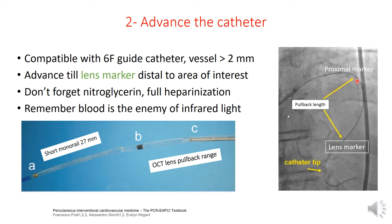The catheter can be used for assessment of any vessel above 2 mm in diameter. On the OCT catheter we have 3 markers: the lower one at the tip, a middle one which is the important lens marker, and an upper or proximal one. We introduce the catheter into the vessel until the middle lens marker is beyond the area of interest. Remember always to inject nitroglycerin and ensure full heparinization before OCT imaging to avoid any spasm effect on your measurements. Remember also that blood is the enemy of infrared light, so a key caveat of OCT is to remove the column of blood during imaging.